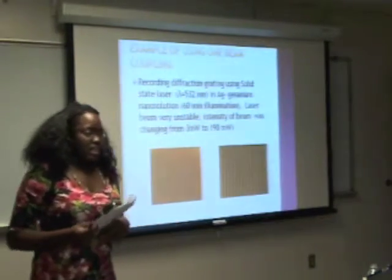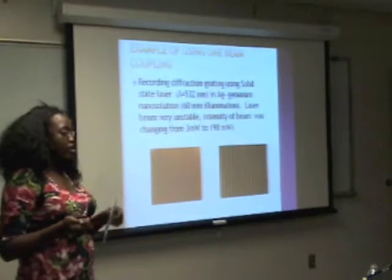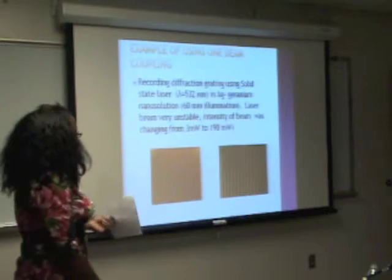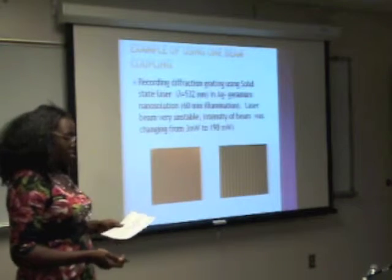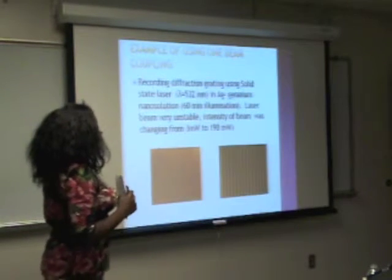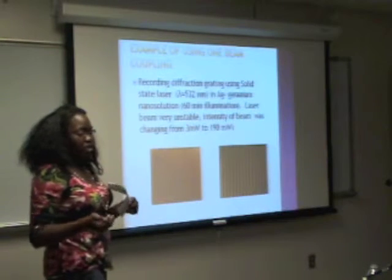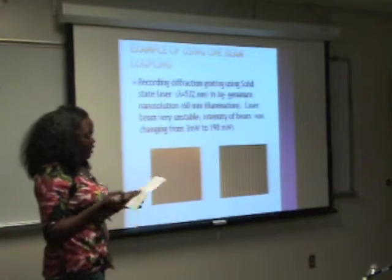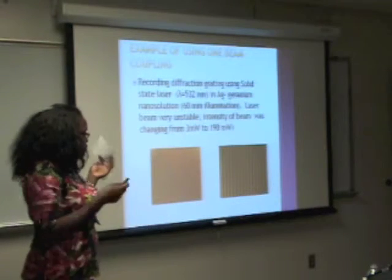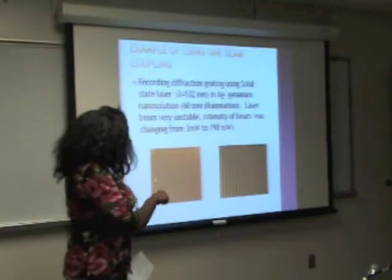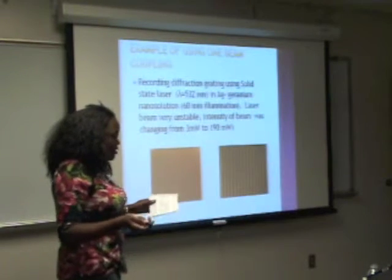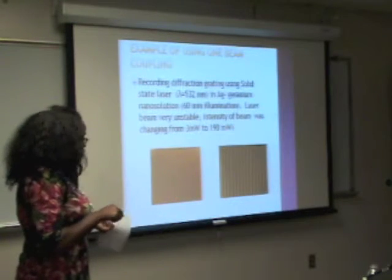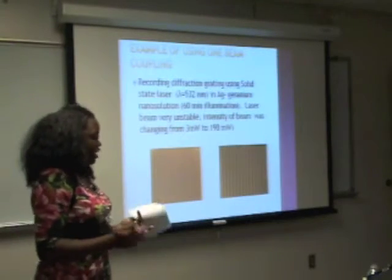This is an example of using the one-beam coupling. This is a recording of the diffraction grating using a solid-state laser at 532 nanometers. A silver germanium mount solution was used, and this recording was done for a whole hour of illumination. The laser beam was kind of unstable — the beam was changing from 3 milliwatts to 190 milliwatts. So you can tell from this picture that the gradients didn't come out well, because after an hour it should have looked something like this, but it turned out like this because the laser was not calibrated correctly.